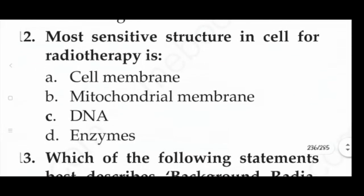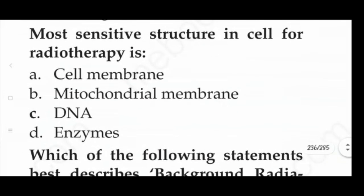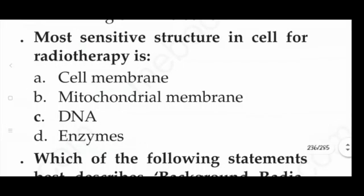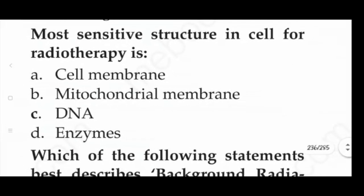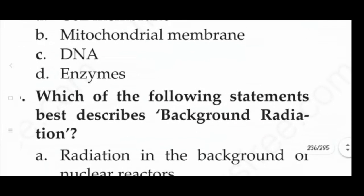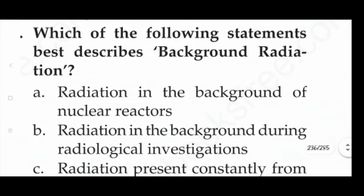Next question: the most sensitive structure in a cell for radiotherapy is — option A: cell membrane, option B: mitochondrial membrane, option C: DNA, option D: enzymes. The answer is option C, that is DNA.